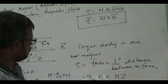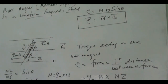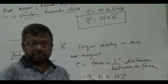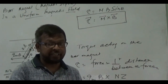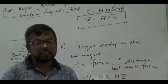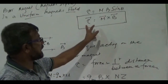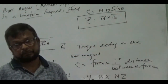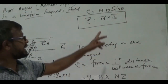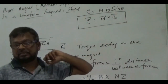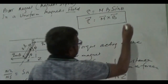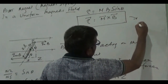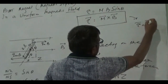This type of derivation you have done before — when an electric dipole is placed in a uniform electric field, it experiences a torque, and that torque was tau equal to P cross E.